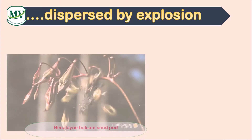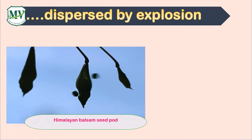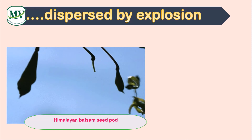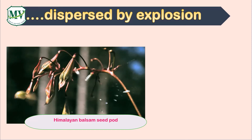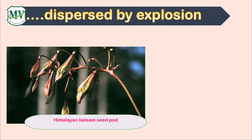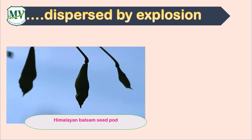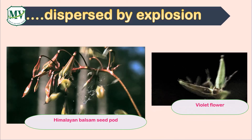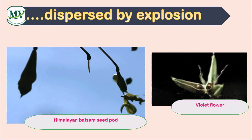Now lastly, we have dispersal by explosion. In the case of Himalayan balsam seeds and violet, the explosive mechanism of the pods relies on turgor pressure to provide the force needed to launch a new generation of seeds to life.